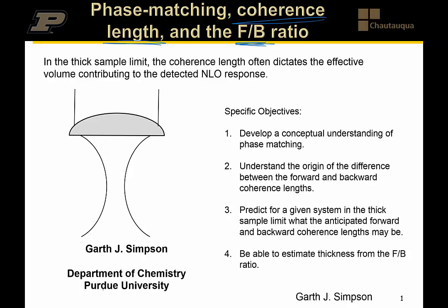Our agenda today is to first of all see we can come up with a nice conceptual understanding of what phase matching really means. Why is it different in the two different directions? And then how do we use that to our advantage to be able to say something meaningful about the thickness of the sample from forward and backward ratio measurements?